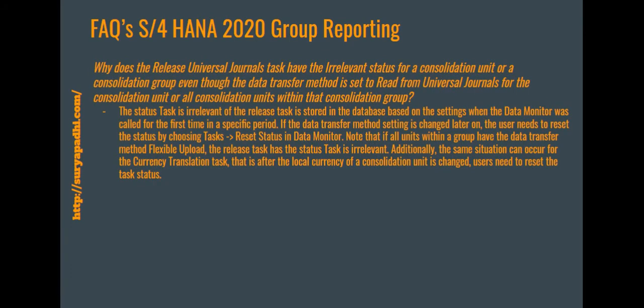Why does the 'Release Universal Journal' task have an irrelevant status for a consolidation unit or consolidation group, even though the data transport method is set to 'Read from Universal Journal'? The task status is stored in the database based on the settings when the data monitor was called for the first time. If you have changed the transport method after that, choose the task and reset the status in the monitor — that way you can see the correct relevancy of the status in the data monitor.